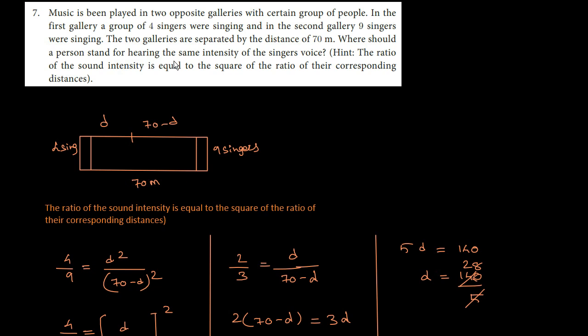Where should a person stand for hearing the same intensity of the singers' voices? The sound intensity is equal to the square of the ratio of their corresponding distances. Sound intensity and distance squared are inversely related.